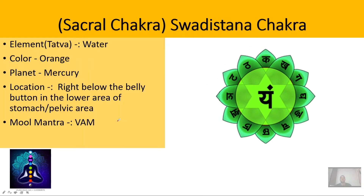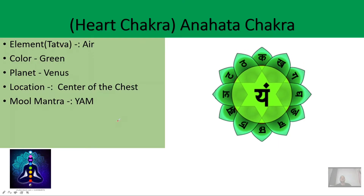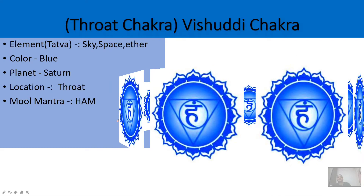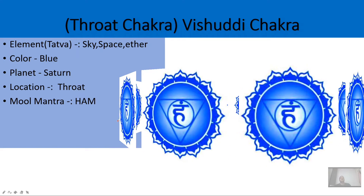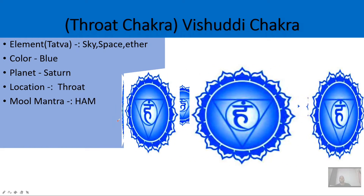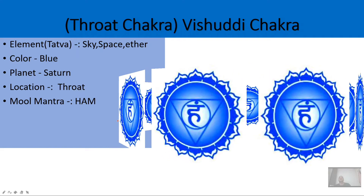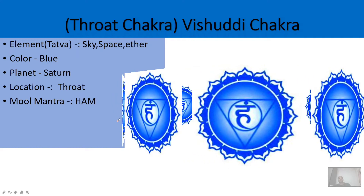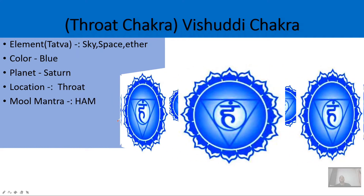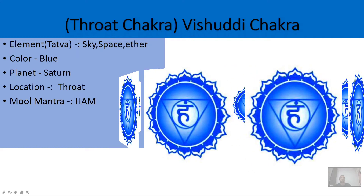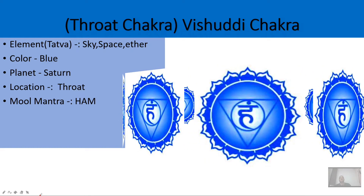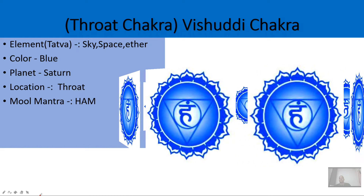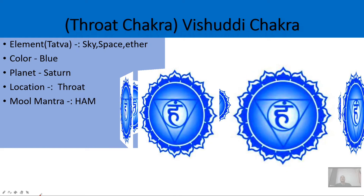The fifth chakra is the throat chakra. As the name indicates, it is present in the throat. In Sanskrit it is called the Vishuddhi chakra. The element of this chakra is sky or space, the color is blue, the planet is Saturn, and the mula mantra is 'Hum' — you can chant it like 'Hum.'